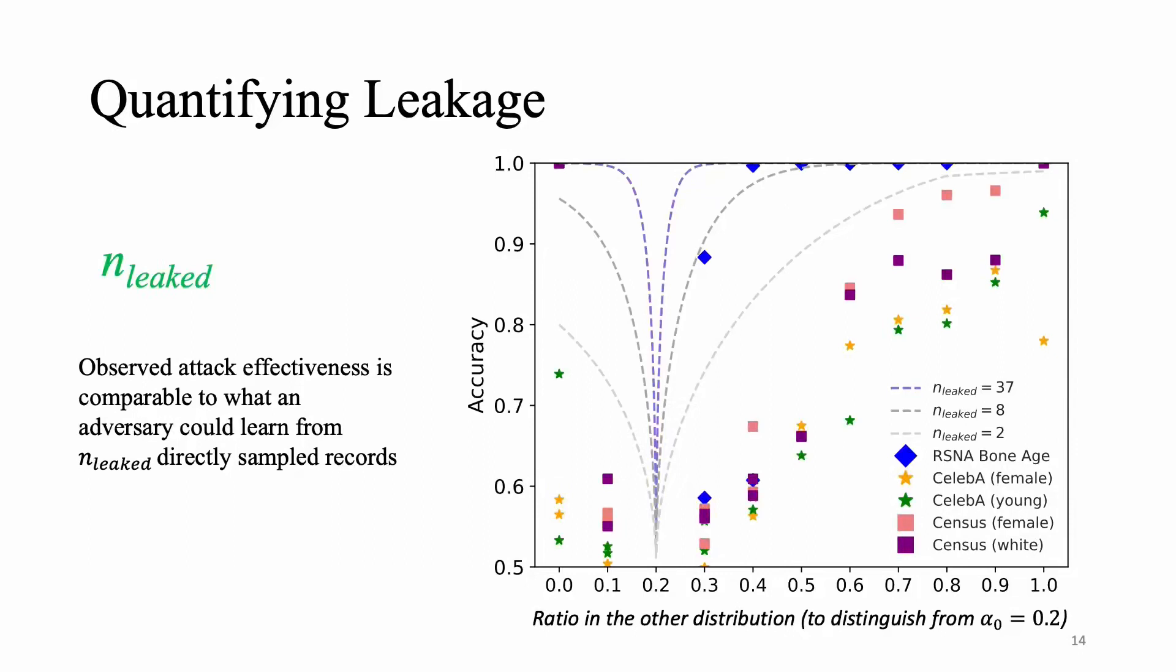And what we see is that even though for most experiments this number is less than two, technically anything more than zero is privacy leakage when the property is not intended to be leaked. And this metric is useful for comparison across different data sets, properties, and experimental settings.